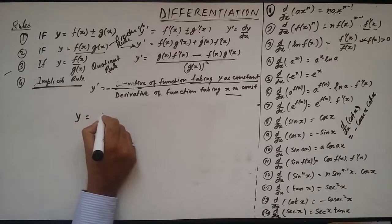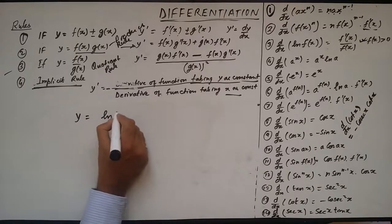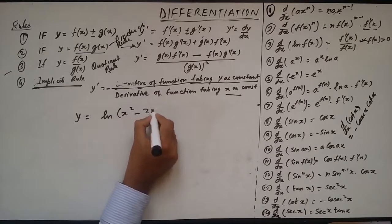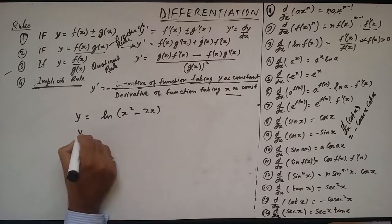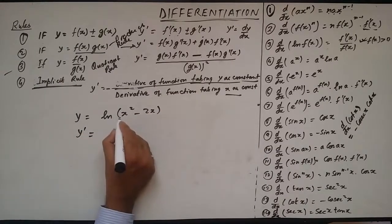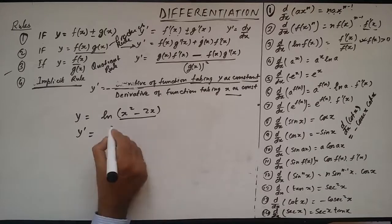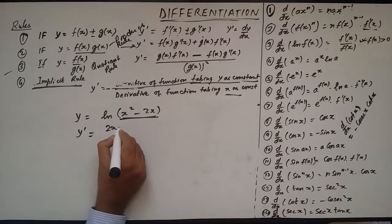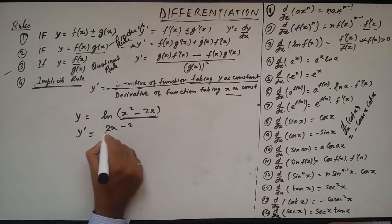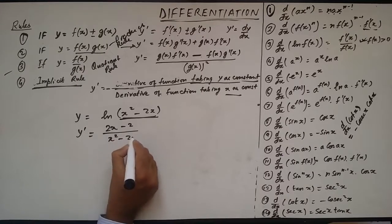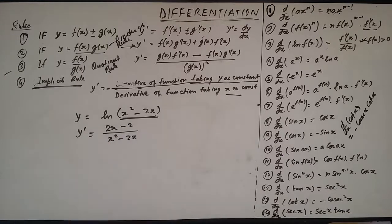y is equal to ln(x² − 2x). The derivative of this function y' is: the derivative of the inner function (x² − 2x) is 2x − 2, divided by that function itself, which is x² − 2x. So the answer is (2x − 2) upon (x² − 2x).